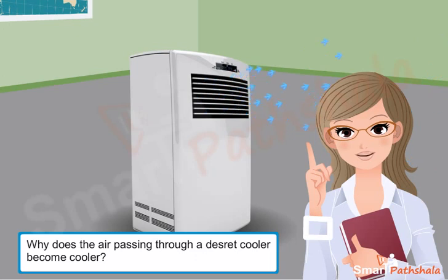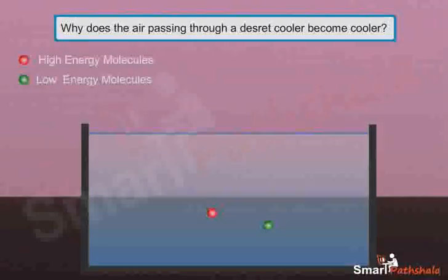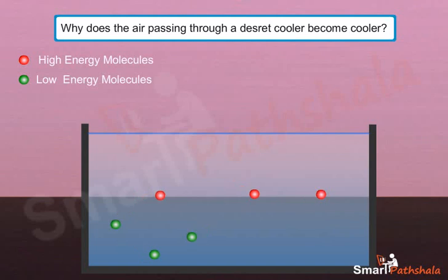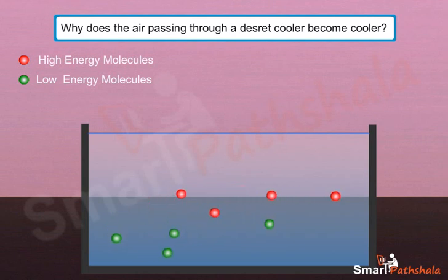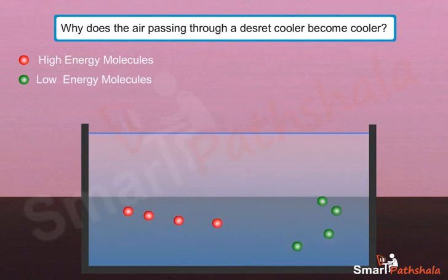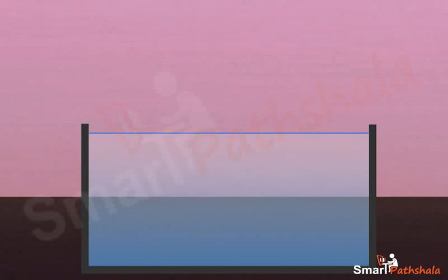The answer to all these questions is evaporation. All the above phenomena are possible due to evaporation. We know that during evaporation, all inter-molecules do not have the same amount of energy. Some molecules have high energy while others may have low energy. The inter-molecules keep changing their energies due to molecular collisions, and some molecules may acquire sufficient energy to escape from the free surface of the liquid.